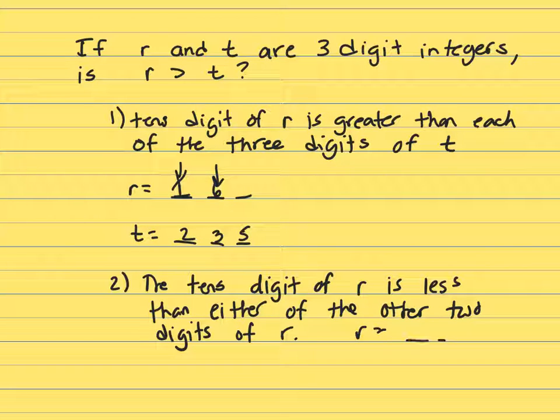I've got R is blank, blank, blank, and T is blank, blank, blank. And it says the tens digit of R is less than either of the other two digits of R. So, this digit here is less than either of the other two digits of R.